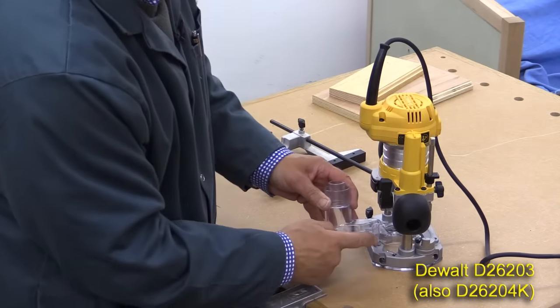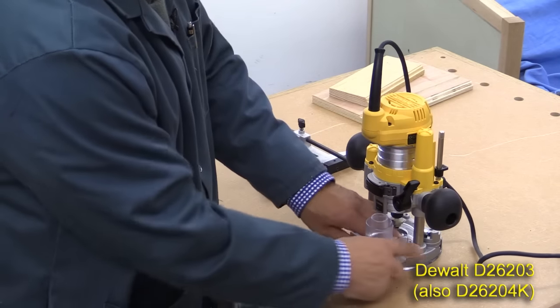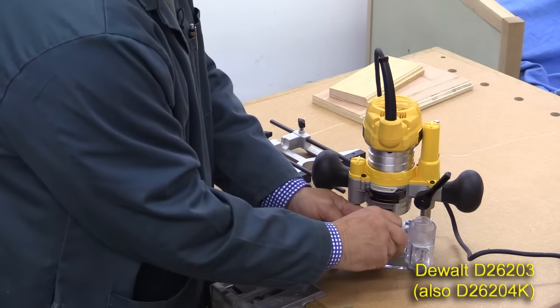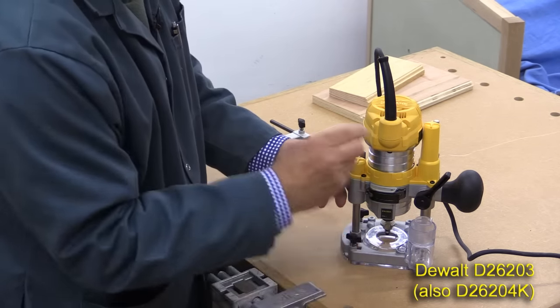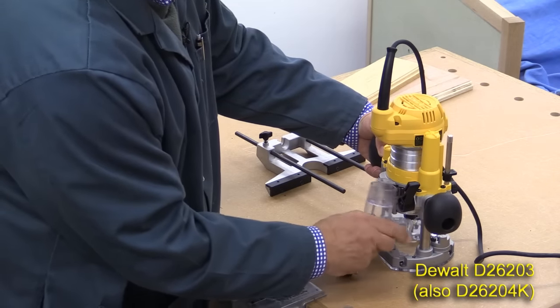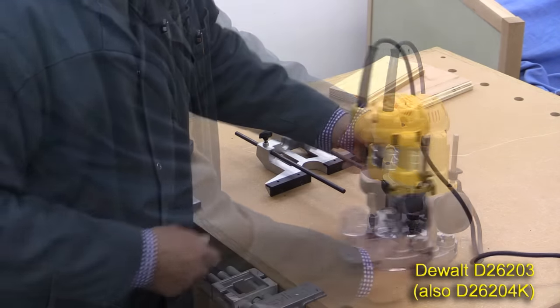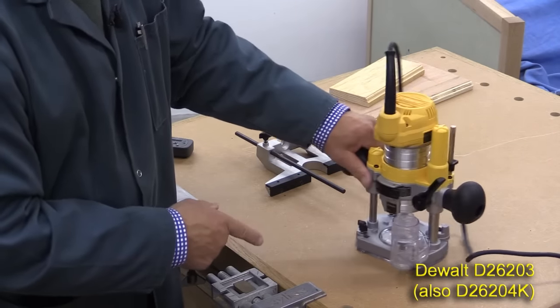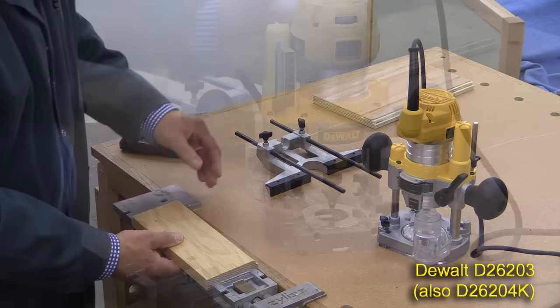Then there's a screw with a washer, which you then use to hold that in position. To remove it, obviously take the screw away, and then you need to press in on that lever there, and then that allows you to take that out. I've still got my Roman OG cutter in there, so I'm now going to repeat the last cut I did on this same piece of wood.